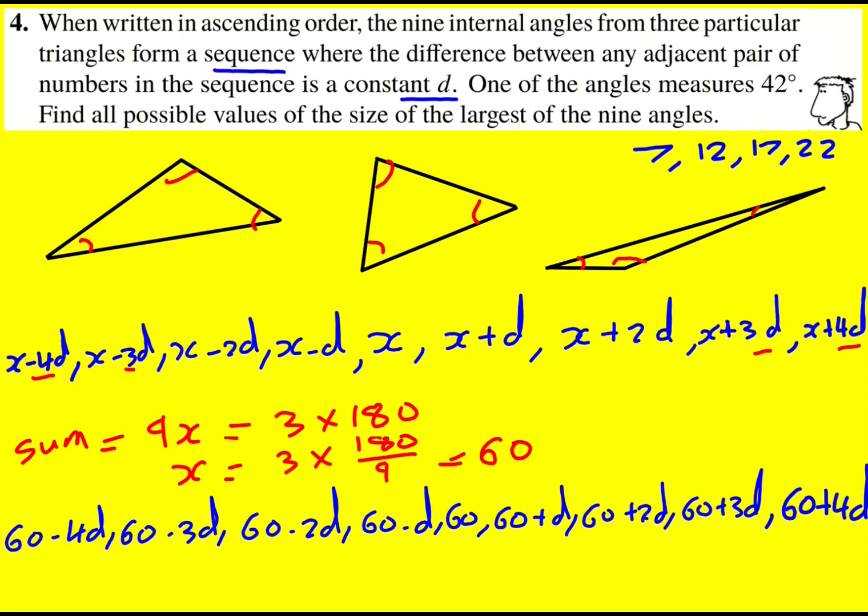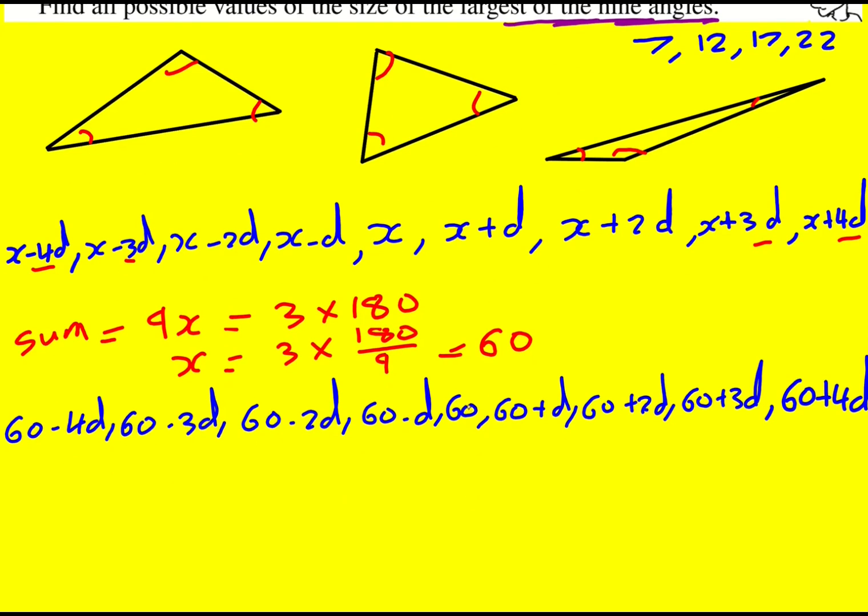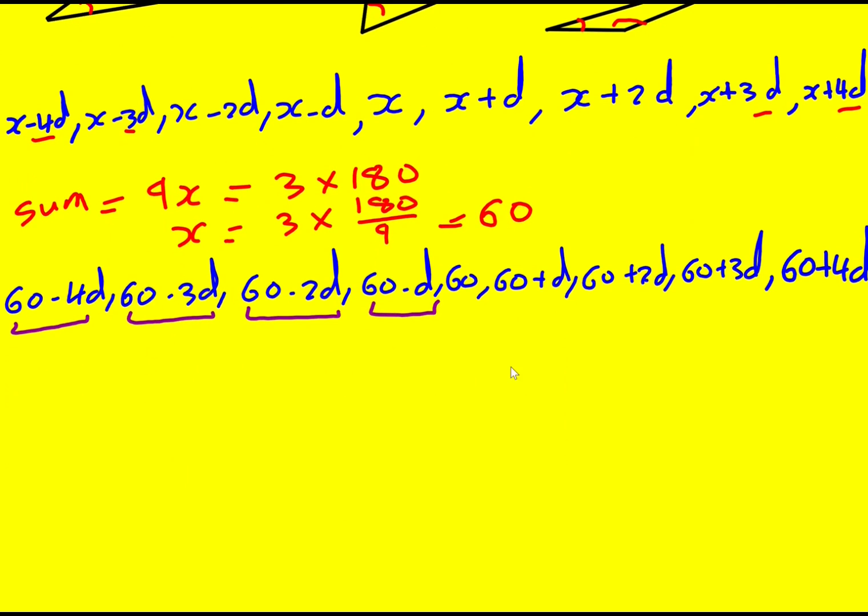One of the angles measures 42 degrees. Find all possible values of the size of the largest of the nine angles. Because we know that 60 is the middle angle, we've got these four cases that could equal 42. Case one: 60 minus 4d is equal to 42. We can rearrange that so 4d is equal to 18, and therefore d is equal to 4.5. Nothing saying it has to be, every angle has to be a whole number. So that is actually absolutely fine.